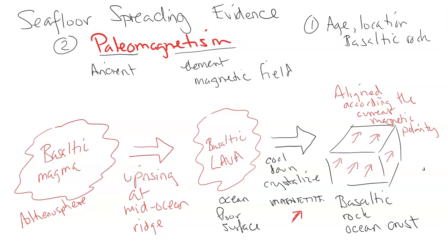Vine, Matthews, and Morley all observed this in their research and experiments. Even back in Iceland, fishermen and mariners had found a strong magnetic anomaly in the 18th century, but it took until 1963 for Vine, Matthews, and Morley to develop this hypothesis and use it as a piece of evidence to prove Hess's seafloor spreading theory — just one year after Hess had suggested it. In the next video we'll look at the application: what did Vine, Matthews, and Morley do with this information and how did it show up on the ocean floor?